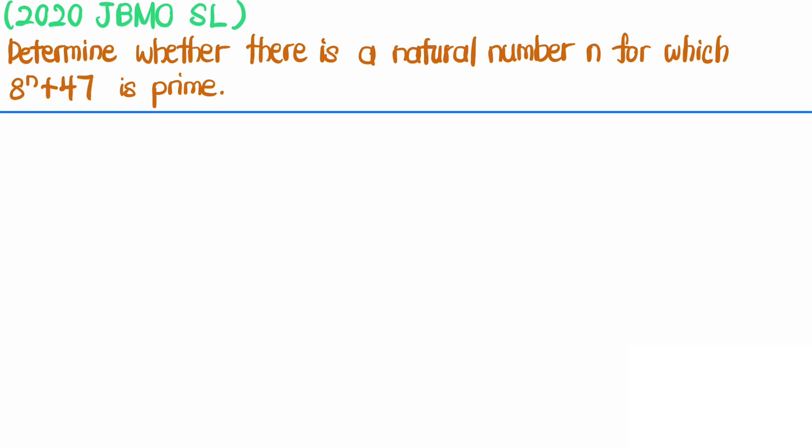Let's solve a number theory problem from the 2020 Junior Balkan Mathematical Olympiad, which says: determine whether there is a natural number n for which 8 to the power of n plus 47 is prime. Before we look into a solution, let us first explore some small cases and look into the tools required for this question.